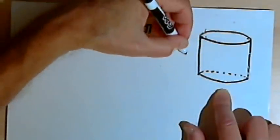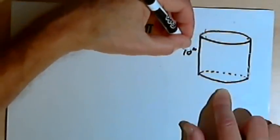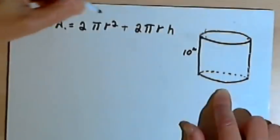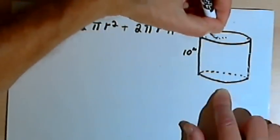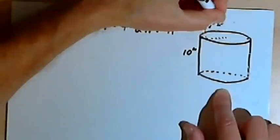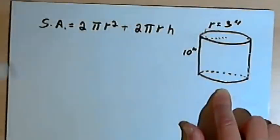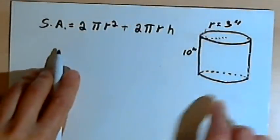So let's say this cylinder is 10 inches in height and it's got a radius of 3 inches. Let's just plug the numbers into the formula.